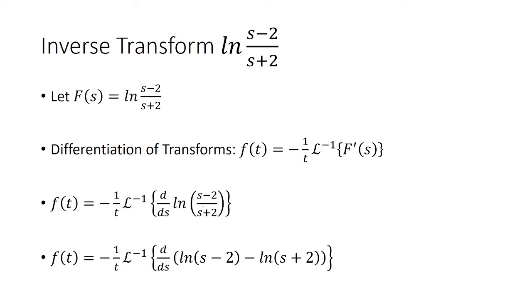And I can rewrite ln of s minus 2 over s plus 2 using log properties. And the reason I'm doing this is because it's much easier to take the derivative of this versus the original. Because I have to apply the chain rule, and then when I take the derivative of the inside, I have to use the quotient rule. So that takes a while to do.